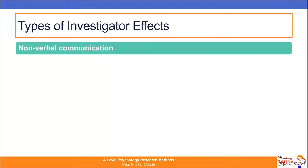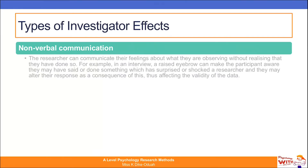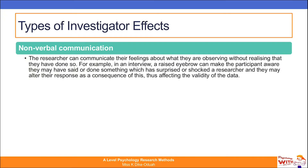The first type is non-verbal communication. The researcher can communicate their feelings about what they are observing without realising they have done so. For example, in an interview a raised eyebrow can make the participant aware that they may have said or done something which has surprised or shocked the researcher, and they may alter their response as a consequence, affecting the validity of the data because the participant's genuine behaviour has been suppressed.